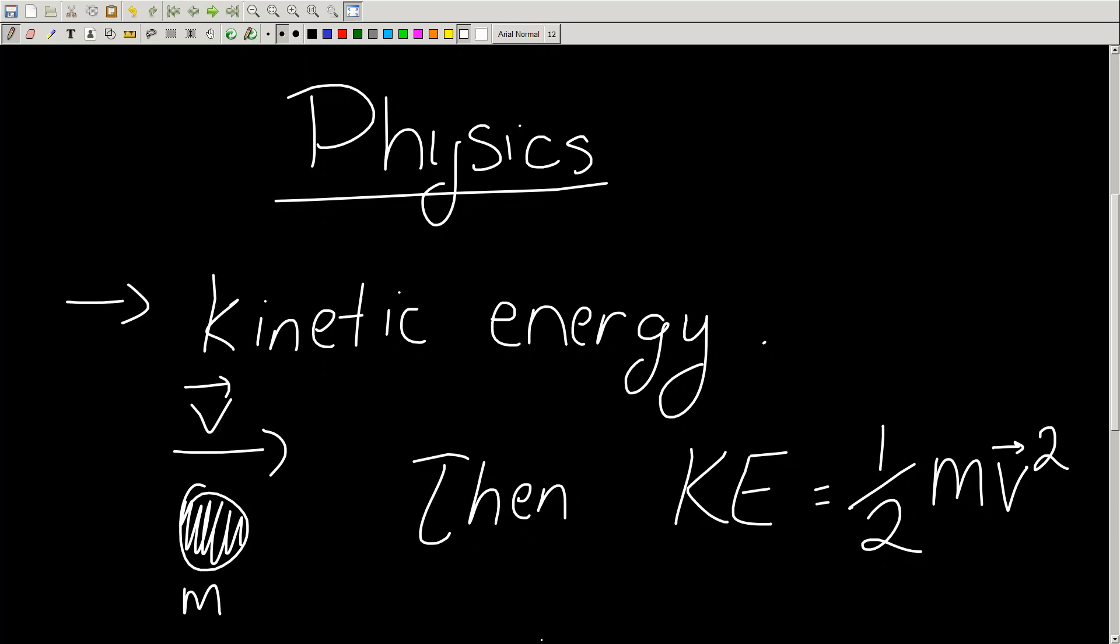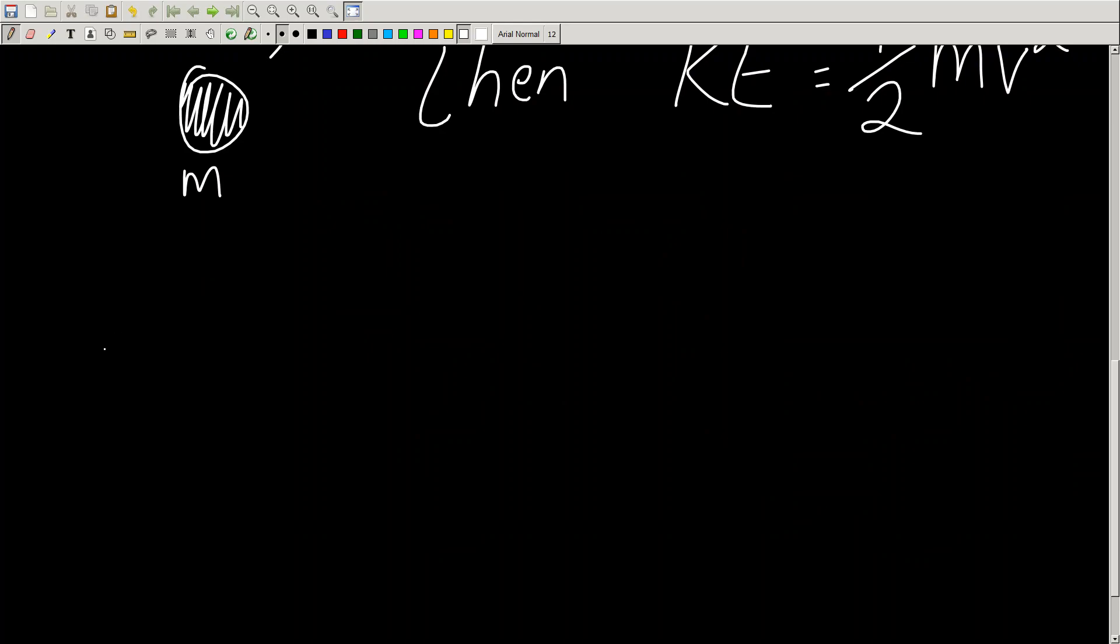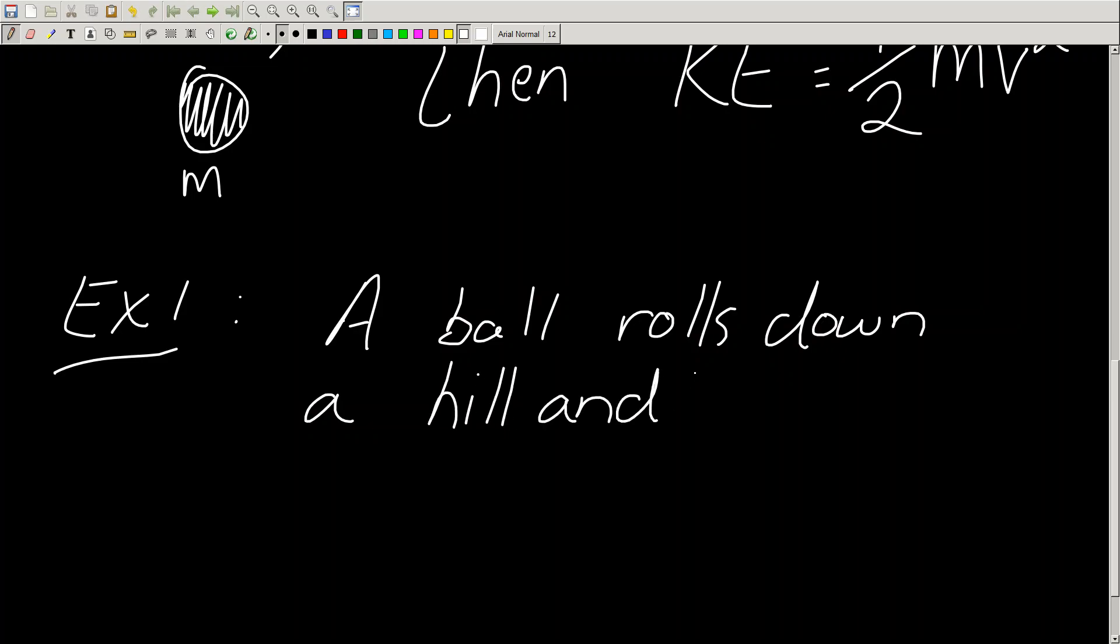It's that simple. So if I wanted to calculate the kinetic energy of an object, let's say example one: a ball rolls down a hill and gains a speed of, say, 10 meters per second down the hill at the bottom of the hill.